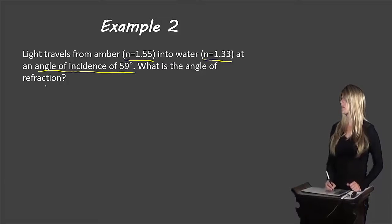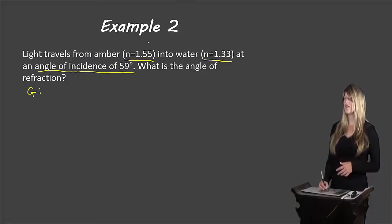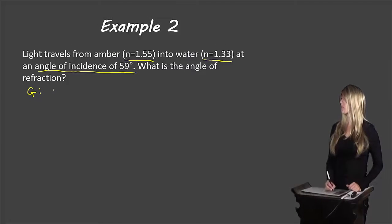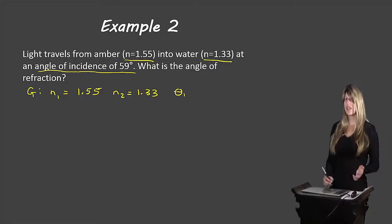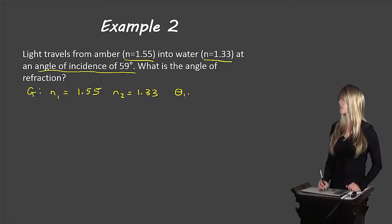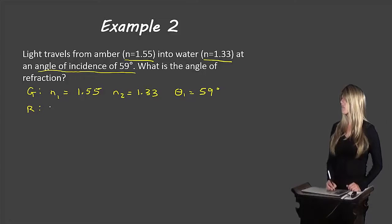Let's go through the steps. Starting with our givens: light travels from amber into water, so amber is n1 and water is n2. That means n1 equals 1.55 and n2 equals 1.33. The angle of incidence is theta1, so theta1 equals 59 degrees. The question asks for the angle of refraction, and theta2 represents angle of refraction, so that's what we're looking for.